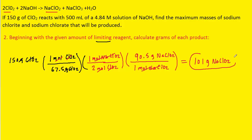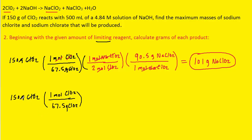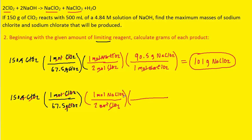Now we're going to run a similar calculation, but this time figuring out the grams of NaClO₃. We begin with the limiting reagent, 150 grams of ClO₂, convert that into moles of ClO₂, then use the ratio that two moles of ClO₂ produce one mole of sodium chlorate. The moles of ClO₂ cancel out. We convert moles of sodium chlorate into grams using its molar mass — one Na, one Cl, and three oxygens — which is about 106.5 grams per mole. Running this through the calculator gives about 118 grams of sodium chlorate.